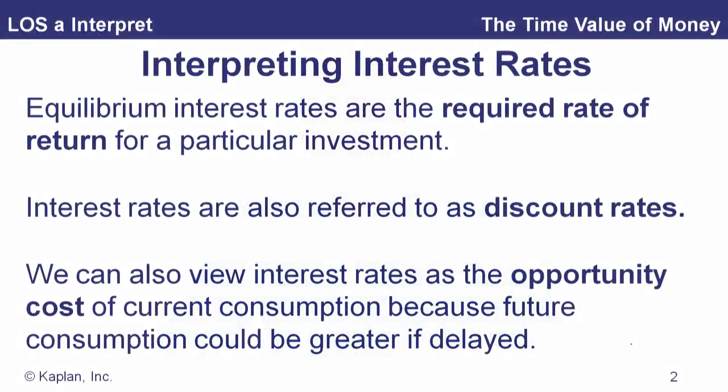Another way we can look at interest rates is as the opportunity cost of current consumption. The decision is really: when workers earn money, do I want to spend it today or do I want to invest it and have more money in the future? In that sense, the interest rate gives you the opportunity cost of consuming now, because what you're giving up is that future amount based on the interest rate. Now let's look at the components of interest rates — this is kind of the buildup view.